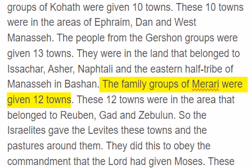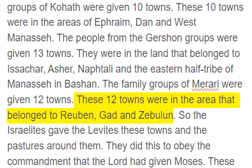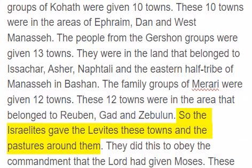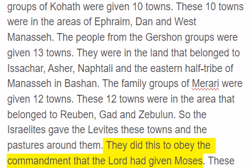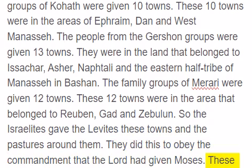The family groups of Mereri were given twelve towns. These twelve towns were in the area that belonged to Reuben, Gad, and Zebulun. So the Israelites gave the Levites these towns and the pastures around them. They did this to obey the commandment that the Lord had given Moses.